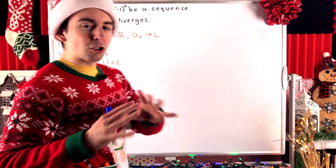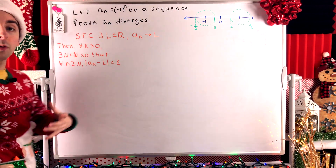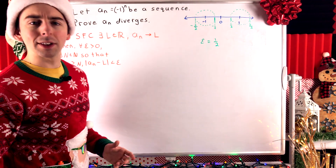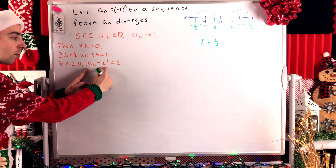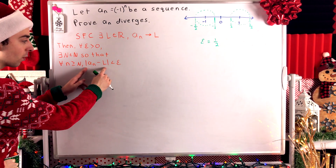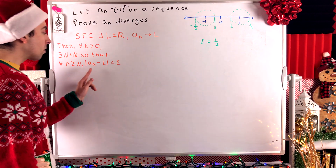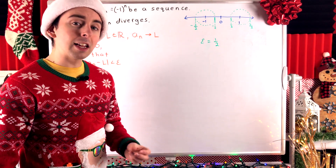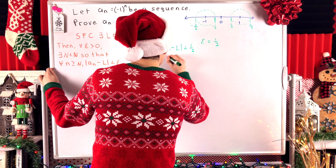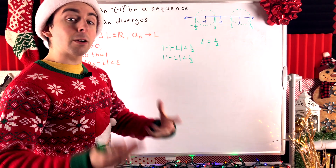Let's look at a number line picture to see exactly what the problem is. Since convergence must hold for every ε > 0, it holds for ε = 1/2. If our sequence converges to L, the terms must eventually get and stay within 1/2 of L. But the terms always alternate between negative one and positive one. This means the distance between negative one and L must be less than 1/2, and the distance between positive one and L must also be less than 1/2.